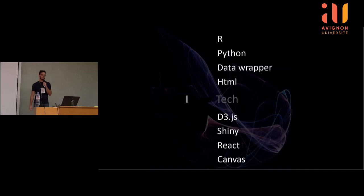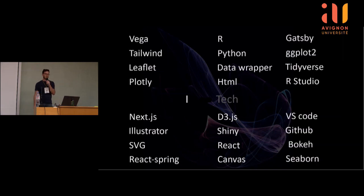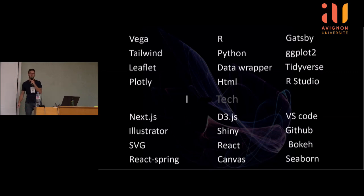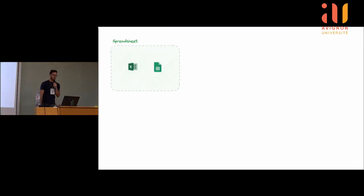Quand on parle de tech, il y a pas mal de choses : R, Python, D3JS, Shiny, Plotly, Vega, des outils no-code... Il y a vraiment énormément de choses. Le but de ce talk, c'est d'essayer de voir comment sont organisés les outils qui permettent de faire de la dataviz, et comment R se positionne parmi tous ces outils. Je vais parler de 5 grandes galaxies.